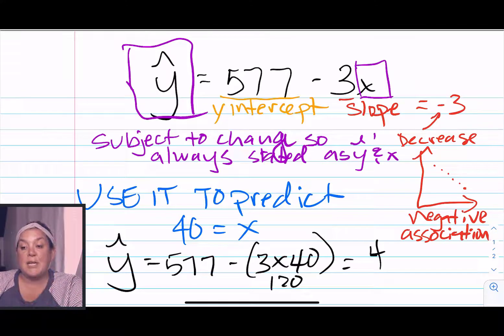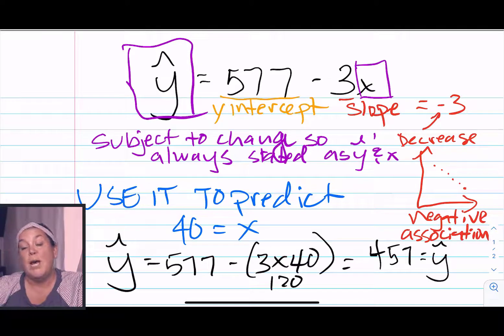So when you plug this in and you get y hat equals 457, that's what the equation is predicting that 40-year-olds can read in terms of distance for a highway sign.